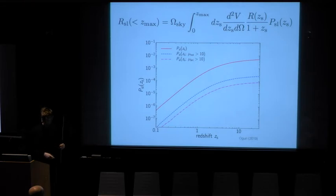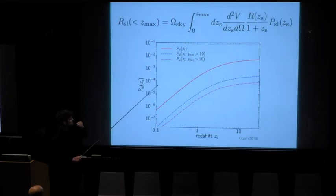And this just shows you why. This shows you the rate less than some Z max of strongly lensed events, and you can see that there's this volume term. So you need to go at the high Z max, and you can see that this probability of strong lensing increases very rapidly until you get to redshift two or three.